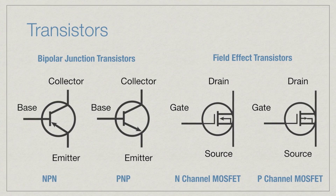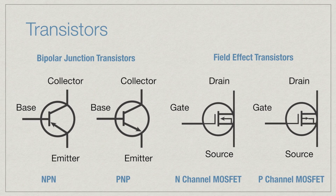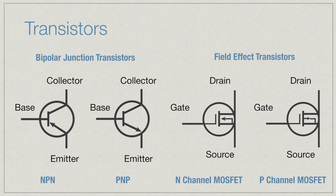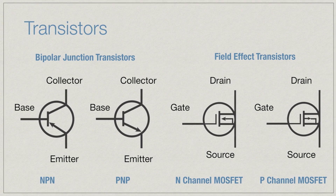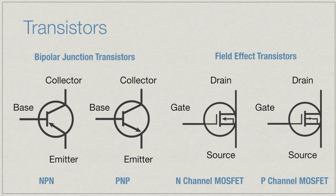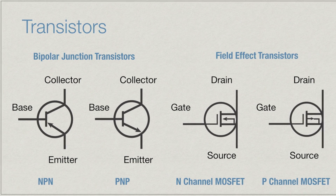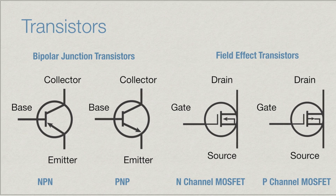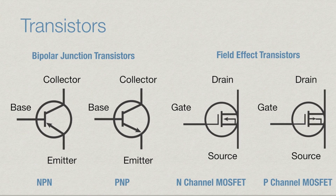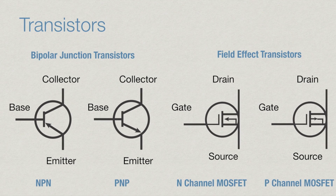Here you can see the different schematic diagrams for transistors. A transistor is a semiconductor component that is used to amplify or switch electronic charges. We can switch charge flow on and off, and we can also amplify small signals into large ones. It uses a small current to control a larger current. An advantage of a transistor is that many of them can fit on a small piece of silicon, and their discovery actually led to the discovery of integrated circuits.